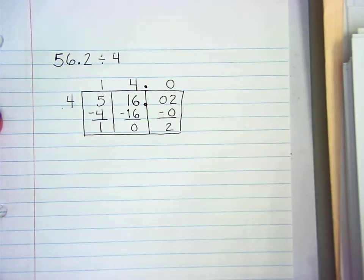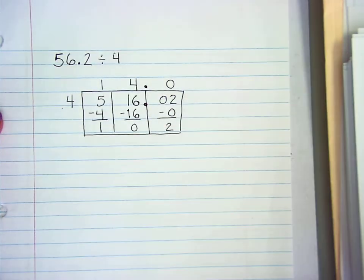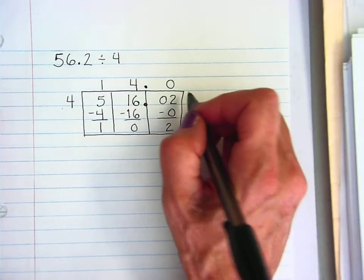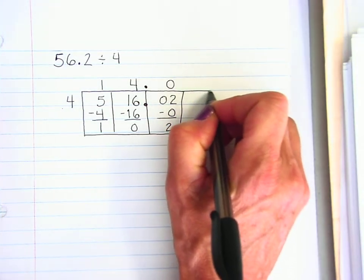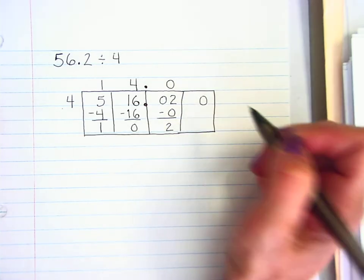Now since we're dividing a decimal, we cannot just bring it up and say it's going to be remainder 2. We're going to annex a 0 onto the end of our number. So I'm going to extend my box and annex that 0.